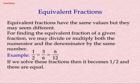Equivalent Fractions. Equivalent fractions have the same values but they may seem different. For finding the equivalent fraction of a given fraction, we may divide or multiply both the numerator and the denominator by the same number. Example: one by two equals three by six equals six by twelve. If we solve these fractions they all become one by two, and these are equal.